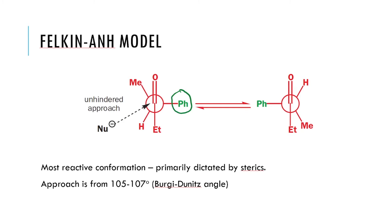If these are the most reactive conformers, then there are four approaches. The approach that we understood from the Bürgi-Dunitz angle was that the nucleophile would approach between 105 to 107 degrees. Of the four approaches, there is one that is more favored. If you pick that one and draw the product that is formed, that will give you the major product. It is a very good framework that helps us predict the outcome of the reaction.